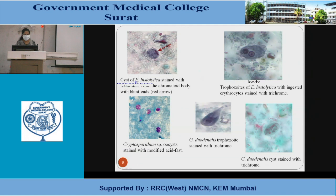This figure shows the barriers. Here is the cyst of E. histolytica stained with trichrome. Here are trophozoites of E. histolytica with ingested erythrocytes, stained with trichrome. Cryptosporidium species oocysts stained with the modified acid-fast stain. Here, G. duodenalis trophozoite stained with trichrome, and here the cyst stained with trichrome.